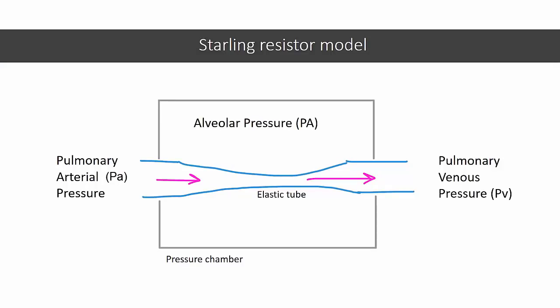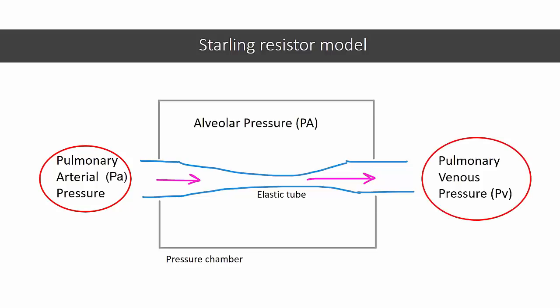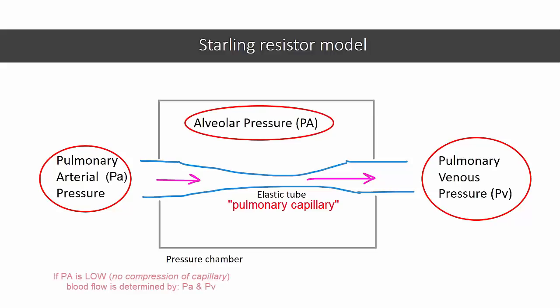Extrapolating that principle to pulmonary vasculature: the upstream pressure is the pulmonary arterial pressure, the downstream pressure is the pulmonary venous pressure, and in between is the pulmonary capillary, exposed to alveolar pressure. When alveolar pressure is low, blood flow is determined by pulmonary arterial and venous pressure. But if alveolar pressure exceeds pulmonary venous pressure, the pulmonary capillary collapses, and blood flow is now determined by pulmonary arterial pressure and alveolar pressure.